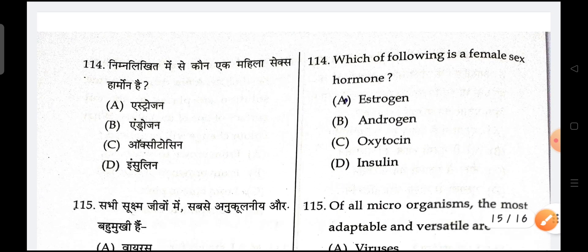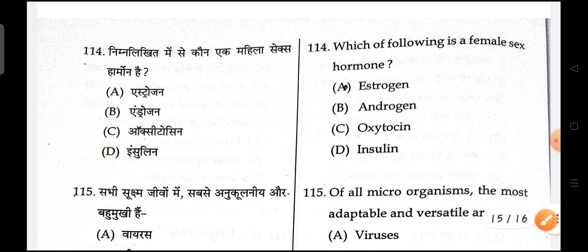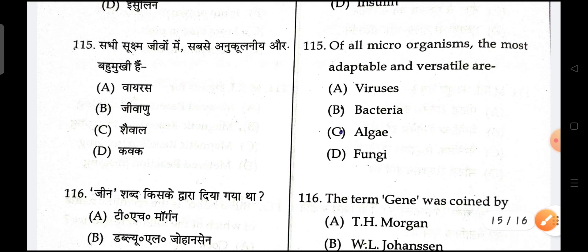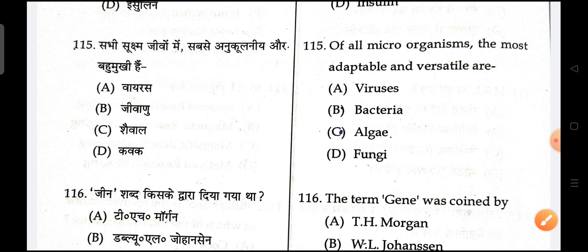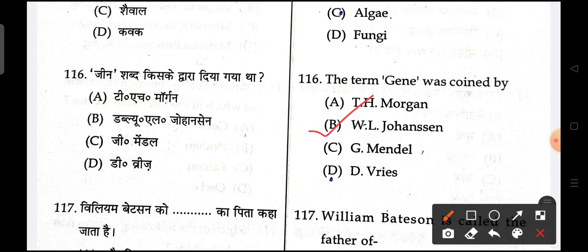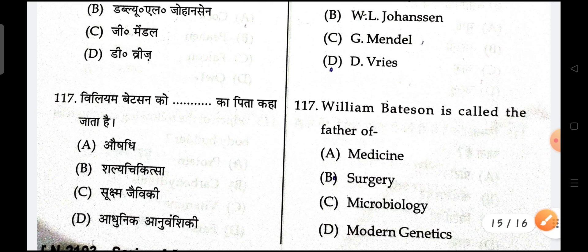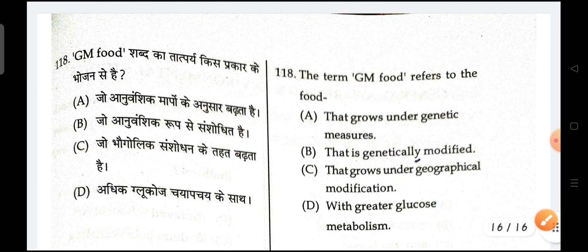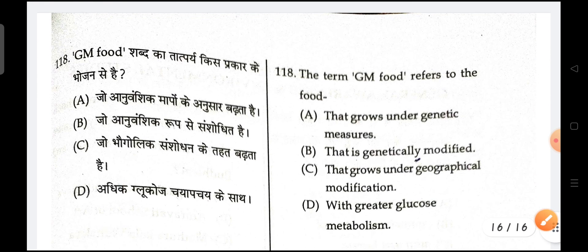Next is, which of the following is a female sex hormone? Estrogen is the correct option. Next is, of all microorganisms, the most adaptable and versatile is virus. Next is, the term gene is coined by — B is the correct option. Next is, William Bateson is the father of modern genetics. Next is, the term GM refers to genetically modified.